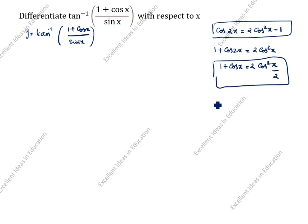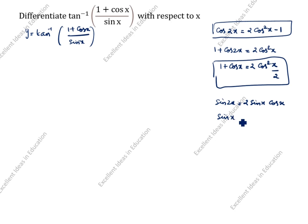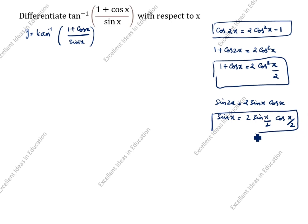Now for sin x: the formula is sin 2x equals 2 sin x cos x. We need only sin x, so replacing 2x with x: sin x is equal to 2 sin(x/2) cos(x/2).